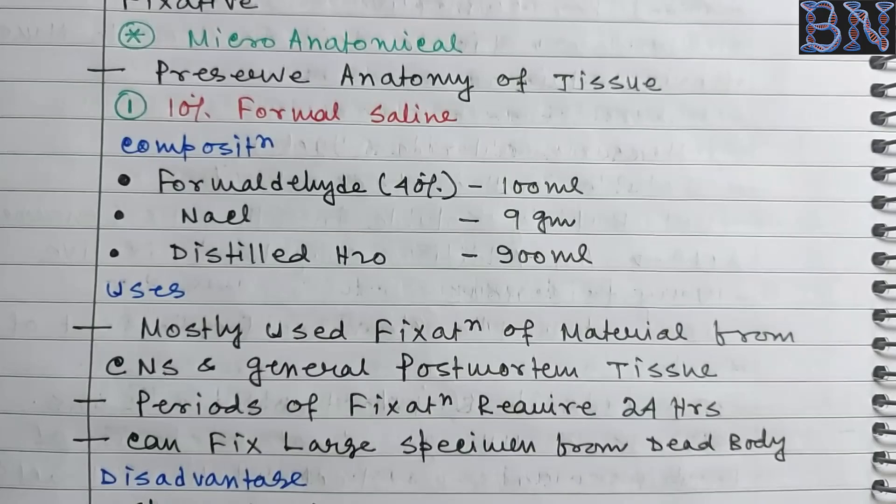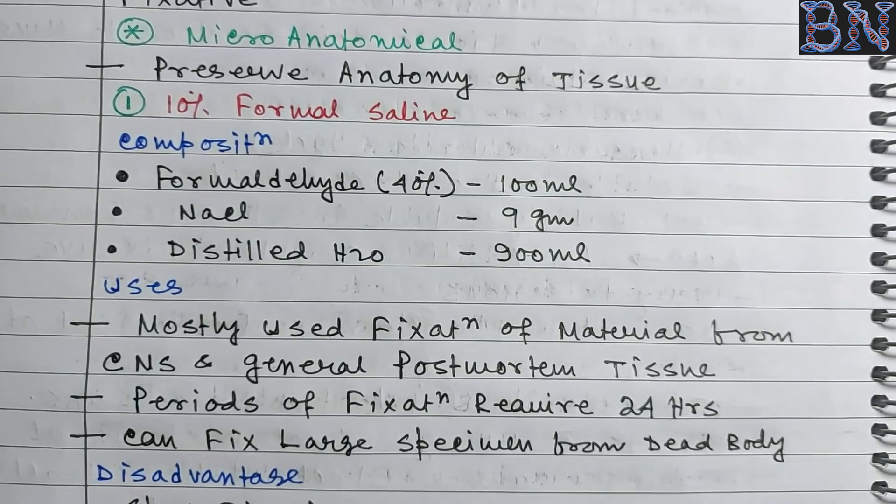The first type of micro-anatomical fixative is 10% formal saline. It preserves the anatomy of tissue. The composition is: formaldehyde 40% — 100 ml, NaCl 9 g, and distilled water 900 ml. So 10% formal saline uses 100 ml of 40% formaldehyde combined with 9 g NaCl in 900 ml of water.